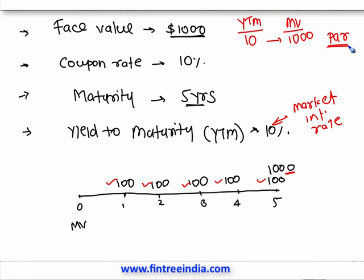But what if YTM were 12%? Market interest rate is 12%, but this bond gives a coupon of only 10% — less than the market rate. The bond is not as good as it should be because it gives less than the market rate. Therefore the price of the bond will be less than 1,000. These kinds of bonds are called discount bonds.